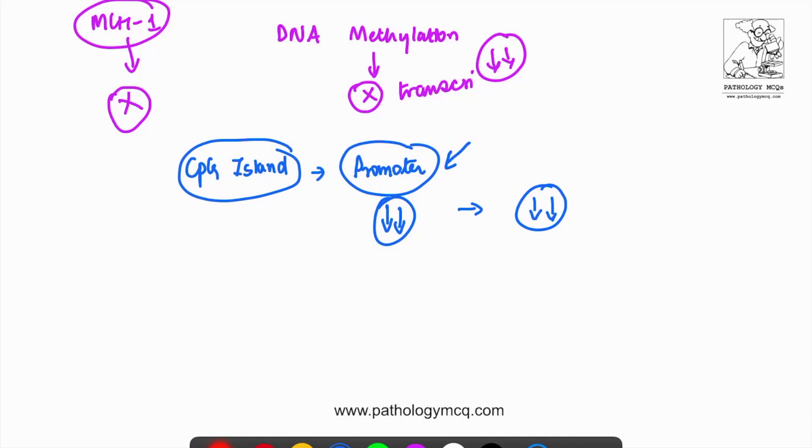So when you do not have MLH1 protein, what do you get in return? Mismatch repair is not happening properly. So microsatellite instable tumors are formed and this pathway happens in a sporadic case. This is about DNA methylation and hypermethylation of MLH1. And remember, this is associated with sporadic tumors, sporadic microsatellite unstable tumors.